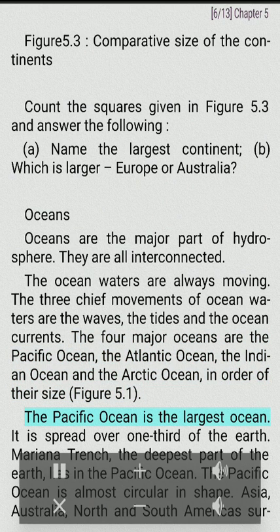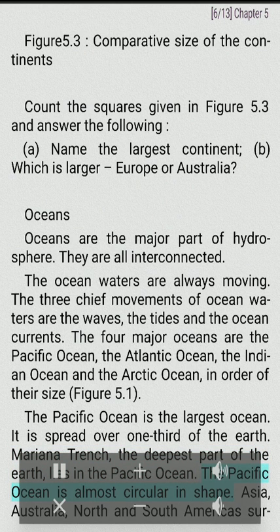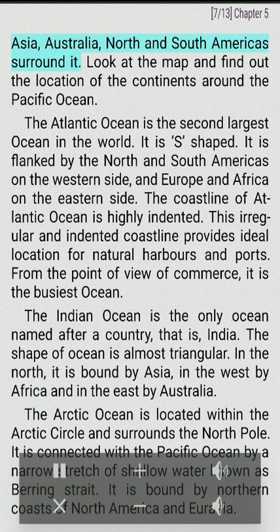The Pacific Ocean is the largest ocean. It is spread over one-third of the Earth. Mariana Trench, the deepest part of the Earth, lies in the Pacific Ocean. The Pacific Ocean is almost circular in shape. Asia, Australia, North and South Americas surround it.